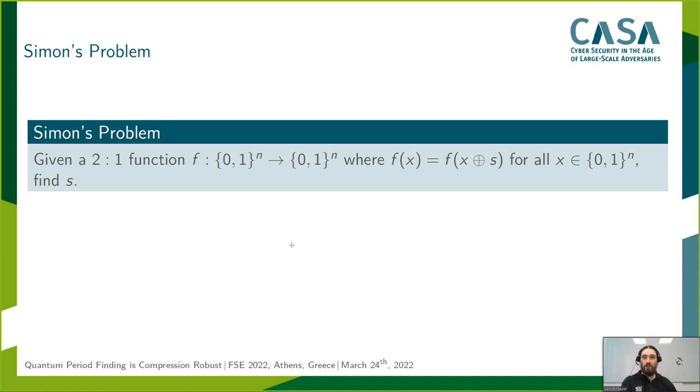For this, we primarily study Simon's problem, which is defined as the problem to find the period s given access to a 2-to-1 function f, with f(x) = f(x ⊕ s) for all x.